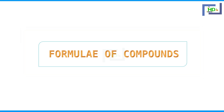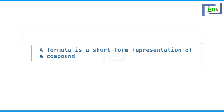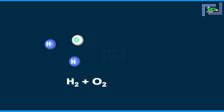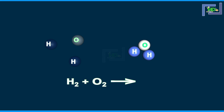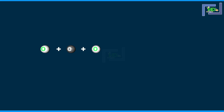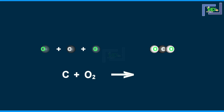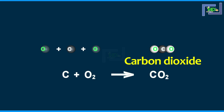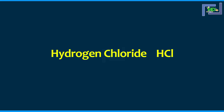Formula of compounds. A formula is a short form representation of a compound. Each compound has a symbol assigned to it. The symbol of a compound is not used for any other compound. A compound is the combination of two or more atoms or two or more elements. The formula for carbon dioxide is CO2, for hydrogen chloride it is HCl.